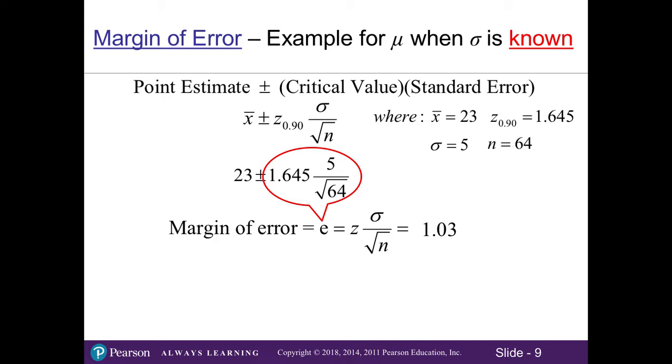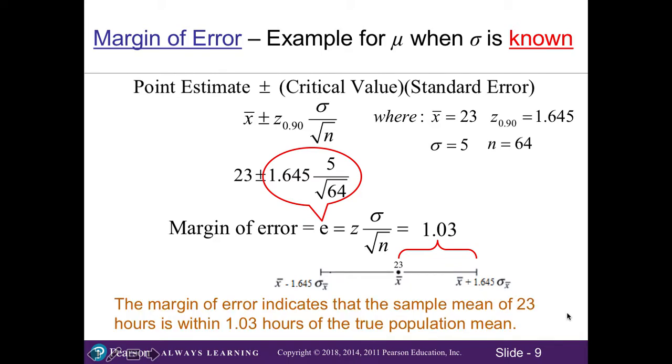The margin of error is half of our interval. Our margin of error is on either side of our sample mean or our point estimate. The margin of error indicates that the sample mean of 23 hours is within 1.03 hours of the true population mean.